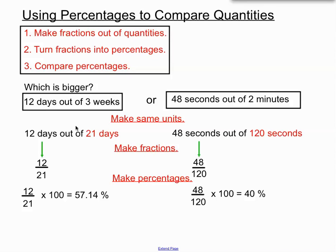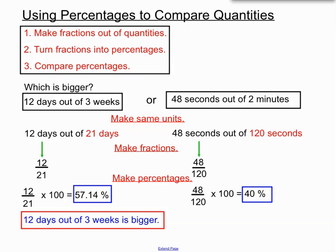Our last step, once we've turned both of these situations into percentages, we'll just compare those percentages because we were originally asked which situation is bigger. So we'll compare that 57% with that 40% and I think it's clear. We can make a clear decision here that the first situation is bigger. The 12 days out of 3 weeks turned out to be bigger than 48 seconds out of 2 minutes.